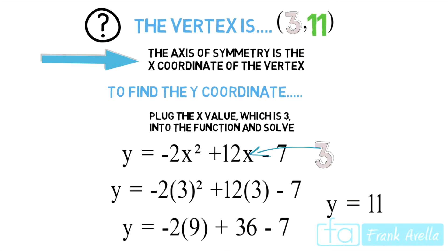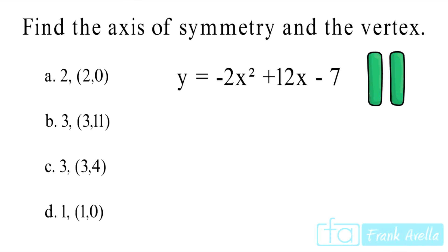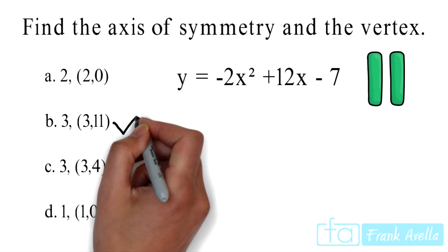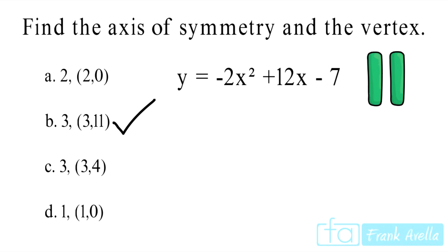Therefore, 11 is our y coordinate. And let's not forget, our x coordinate, which is 3, was the axis of symmetry, which we've already solved for. Let's go back to our original problem: axis of symmetry is 3, and the vertex is 3, 11.